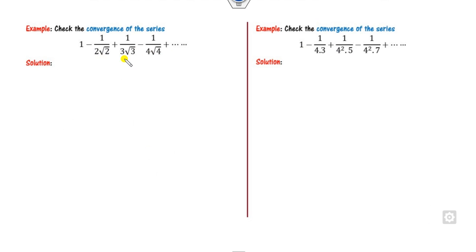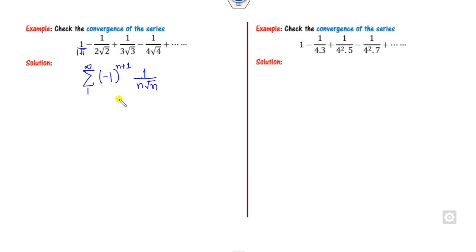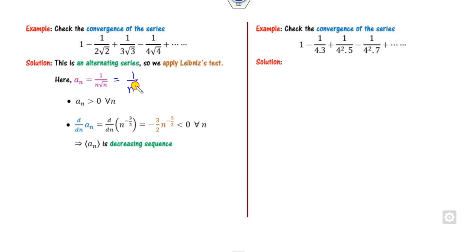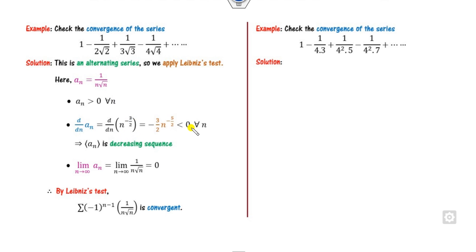Again, these are alternating series. Writing the first term as positive, the nth term has numerator 1 and denominator n^(3/2). a_n = 1/n^(3/2) is clearly positive for all n, it is a decreasing sequence, and the limit is 0. Therefore the series is convergent by the Leibniz test.